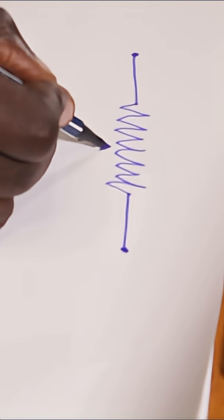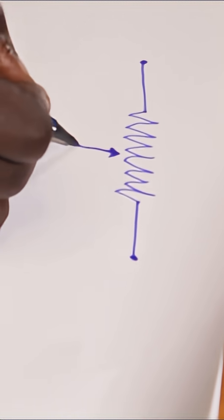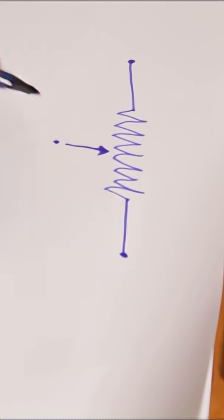If you remember in our previous video, we talked about a variable resistor. This is the symbol for a variable resistor. It is actually behaving like something called a voltage divider, which is a special type of electronic circuit that basically divides voltage.